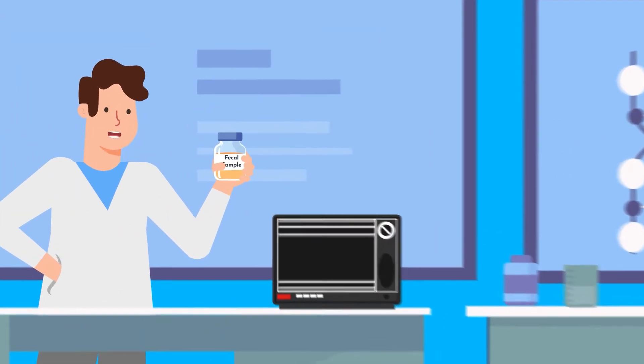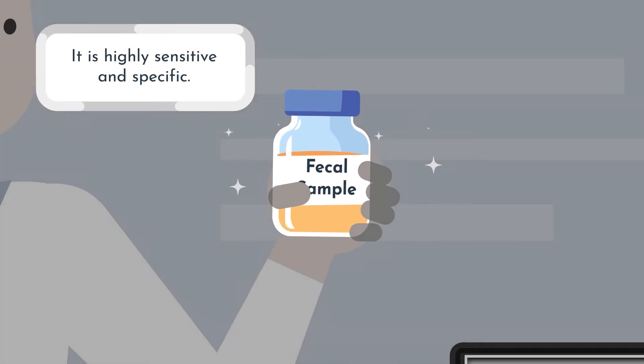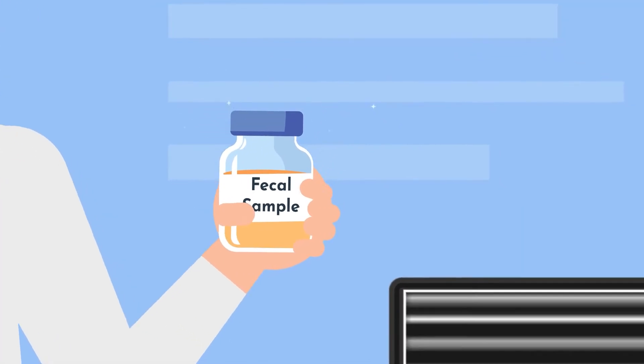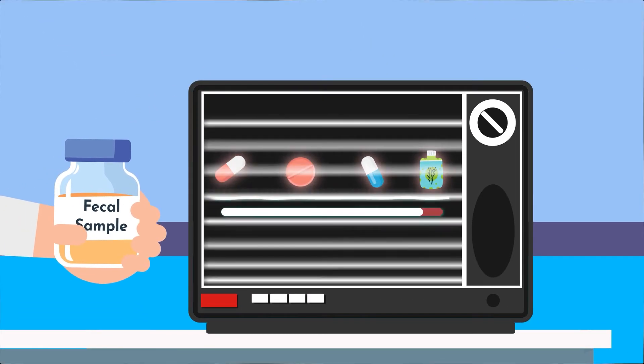The stool antigen test uses fecal samples to detect H. pylori antigens. It's highly sensitive and specific, but like the urea breath test, its accuracy can be affected by recent antibiotic or PPI use and gastrointestinal bleeding.